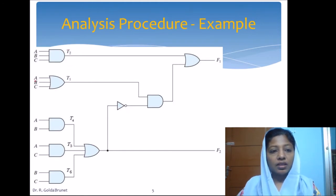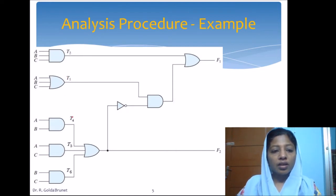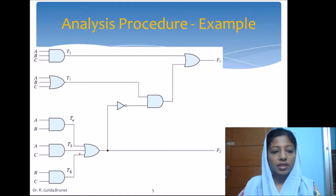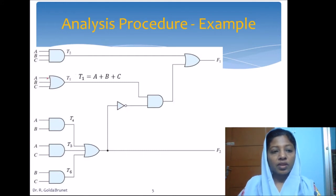We have labeled this OR gate as t1 and this AND gate as t2 — the order doesn't matter. T3 is reserved for another gate, and we have labeled the remaining gates as t4, t5, and t6. We can now write what each temporary variable represents. T1 is the OR of A, B, and C.